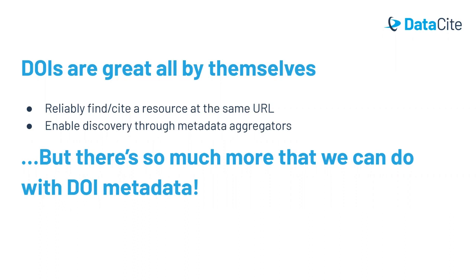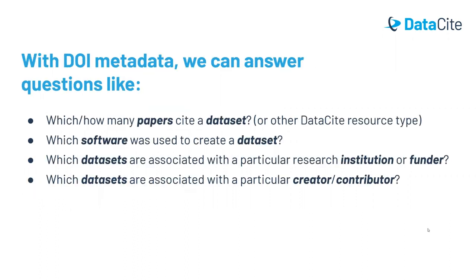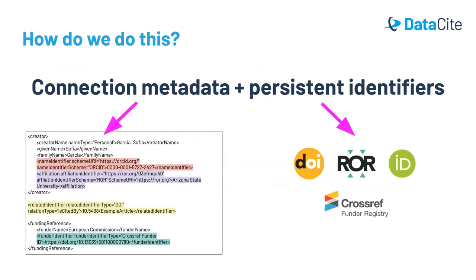That's all good if you know exactly what you're looking for, like the title or the author of the article. But with DOI metadata, we can answer broader questions like: which or how many papers cite a dataset? Which software was used to create a dataset? Which datasets are associated with a particular research institution or funder, or with a particular creator or contributor? We do this by using connection metadata with persistent identifiers.